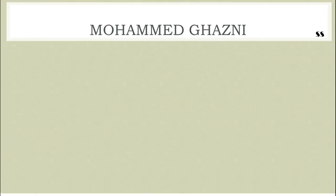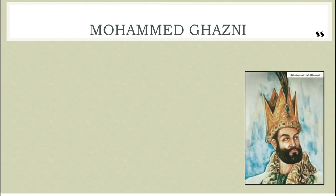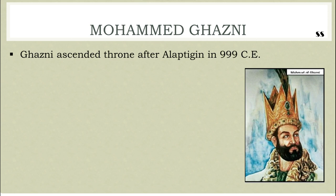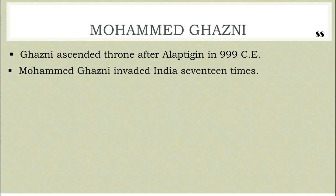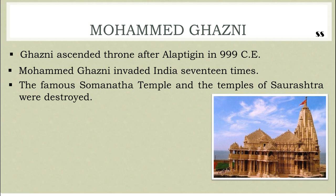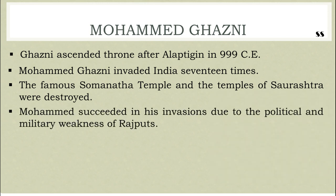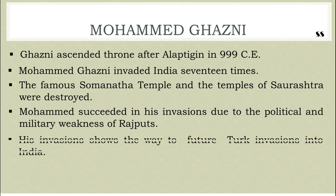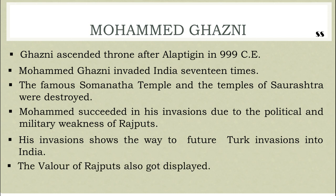Ghazni ascended the throne after Alptegin in 999 CE. Mohammed Ghazni invaded India 17 times. The famous Somnatha temple and the temples of Saurashtra were destroyed during his invasions. Though all the Rajput kingdoms of western India were battered by these invasions, they failed to face the Turks with unity. Mohammed Ghazni succeeded in his invasions due to the political and military weakness of the Rajputs. He invaded 17 times and carried away enormous amounts of golden ornaments and wealth to Ghazni. Though he did not build an empire in India, his invasions showed the way to future Turk invasions. The weakness of Rajputs, who had become weak in internal rivalries, also got displayed.